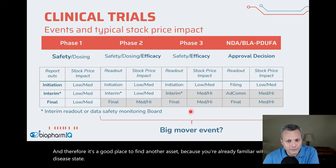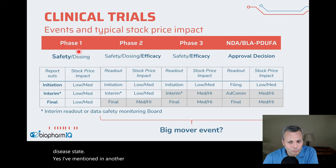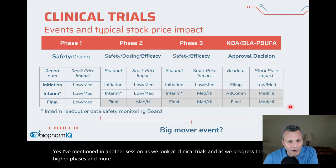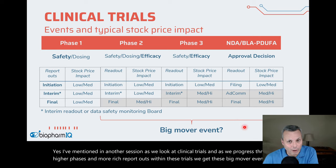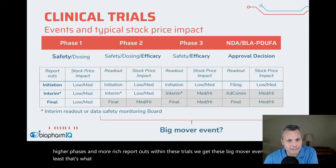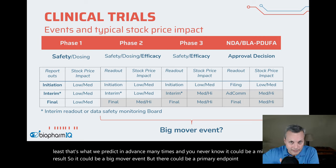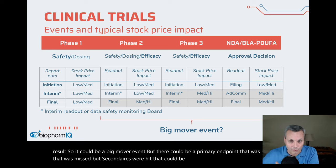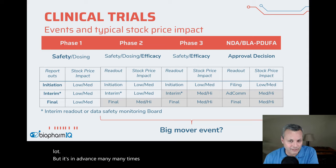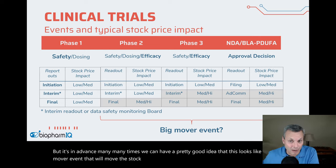As we look at clinical trials and progress through higher phases and more rich readouts within these trials, we get these big mover events — at least that's what we predict in advance many times. There could be mixed results where a primary endpoint was missed but secondaries were hit, so it still doesn't move a lot. But in advance, many times we can have a pretty good idea that this looks like a big mover event that will move the stock at least 25% up or down.